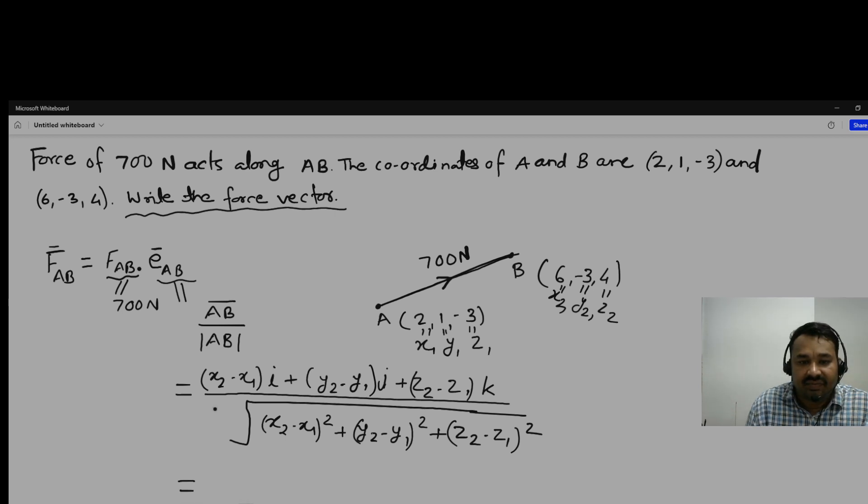So what are we getting? X2 is 6, X1 is 2, so 6i. Y2 is minus 3 and Y1 is 1. Z2 is 4, Z1 is minus 3, k divided by the square root of (6 minus 2) squared—that's 4 squared—plus (minus 3 minus 1) squared—that's minus 4 squared—plus (4 minus minus 3) squared—that's 7 squared.